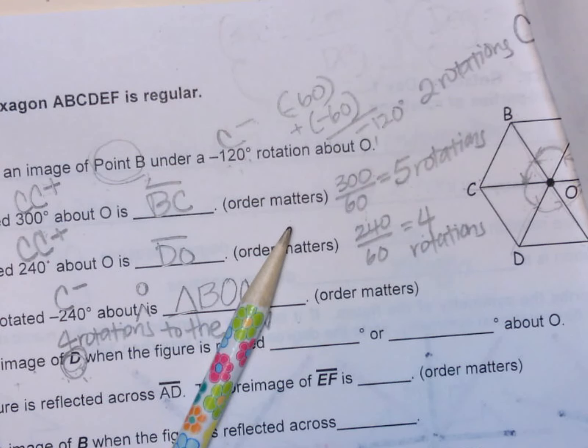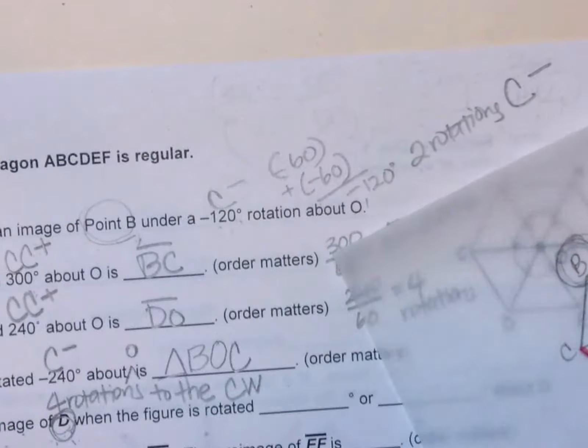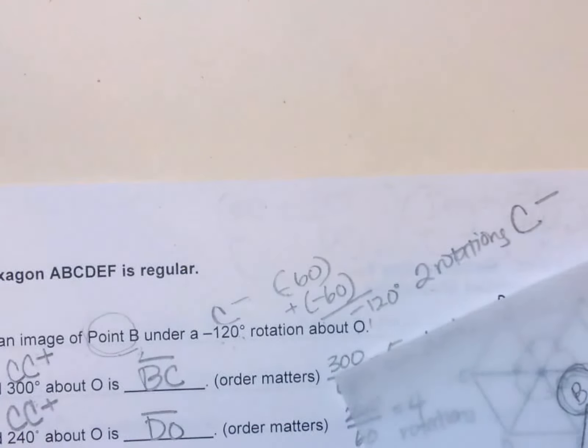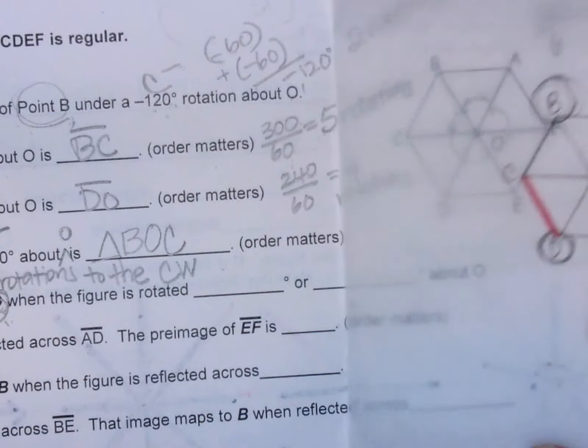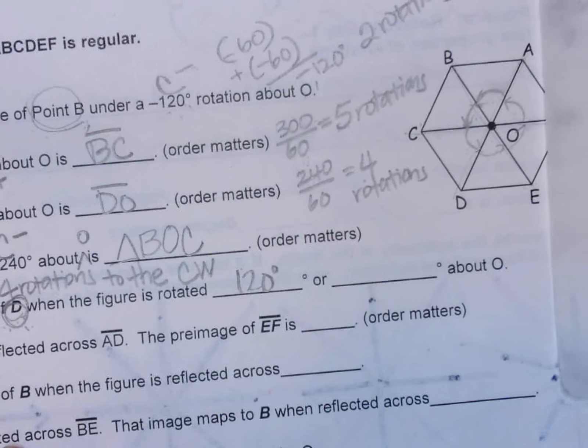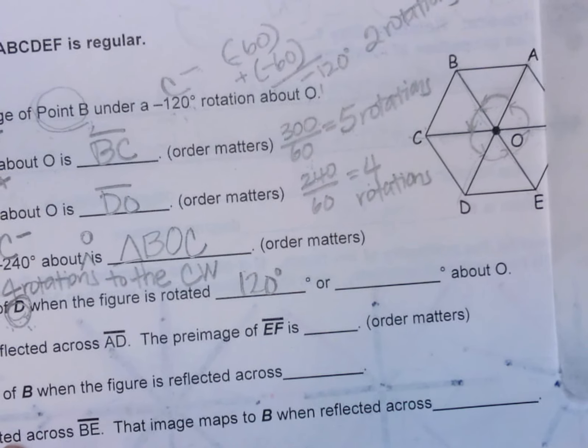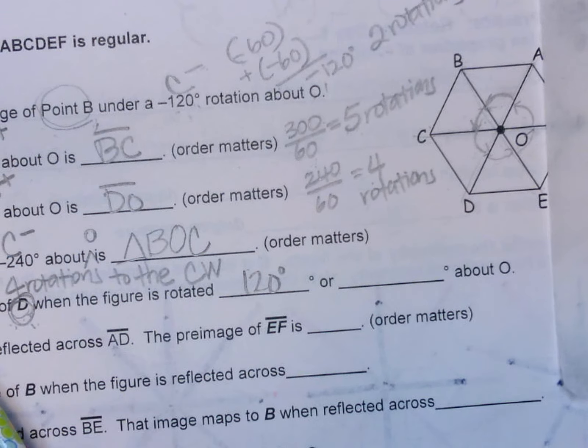Alright everybody, continue on where I left off. Actually over here, I just realized that I was speaking too fast and said the wrong answer. So over here, the last problem we left off, this is 120 degrees, not 60 degrees, because you are rotating it twice.